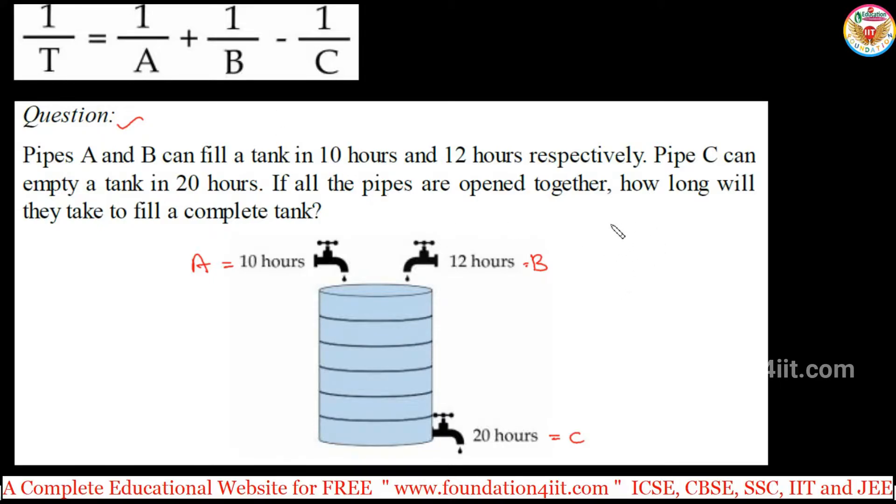The formula is 1/T equals 1/A plus 1/B, which are filling the tank, so that means 1/10 plus 1/12. Which is emptying should be negative because it's doing negative work, so minus 1/C, which is 1/20. T is in hours because all three units are in hours. Just do the LCM: 1/10 plus 1/12 minus 1/20.